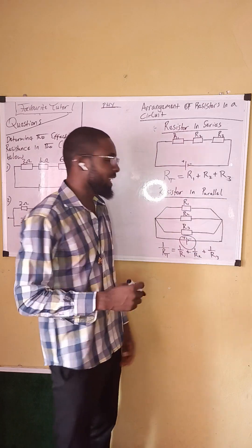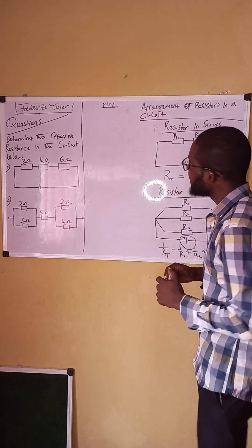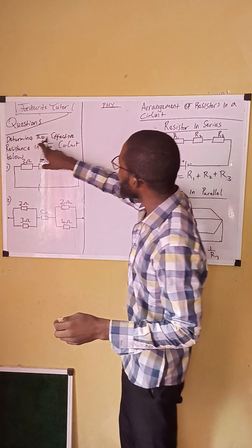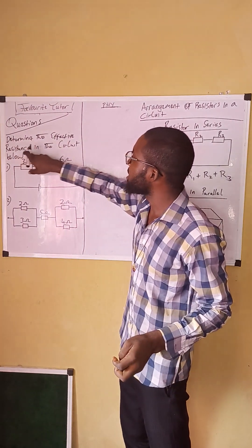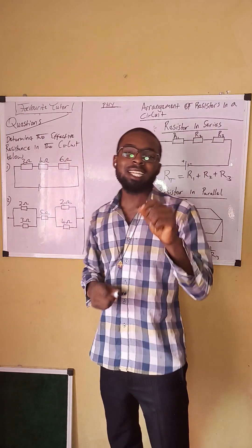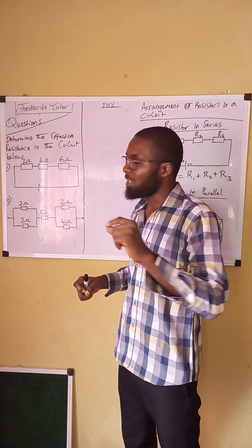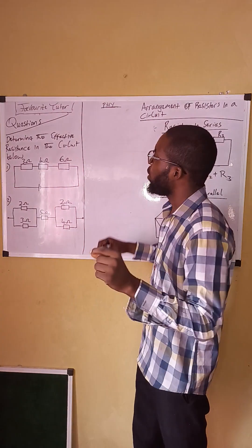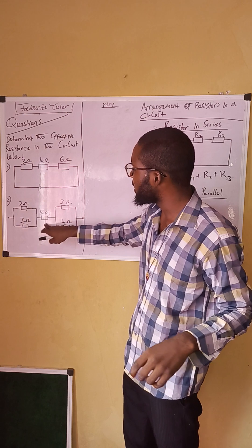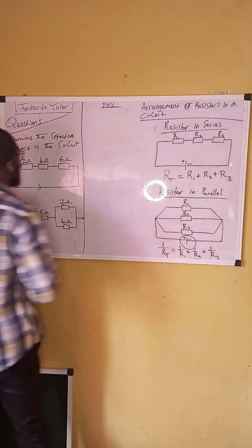Now we have some questions to solve. The question says: determine the effective resistance in the circuit below. We have two circuits — the first and the second. Let's start with the first one.